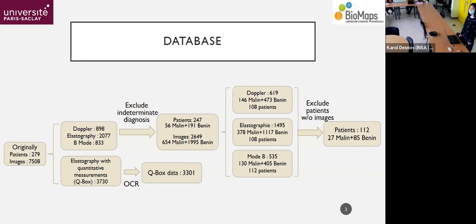First, we have a look at our database. Our database consists of two parts, the image part and the structural data part. Originally, we had 279 patients or accordingly, 7,508 images. And this image consists of two parts. The first part is the three modality image, Color Doppler, shear wave elastograph, and B-mode image.